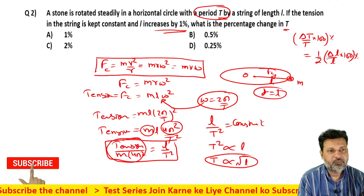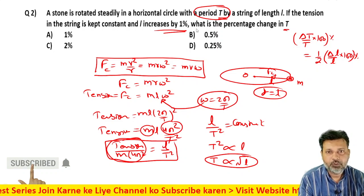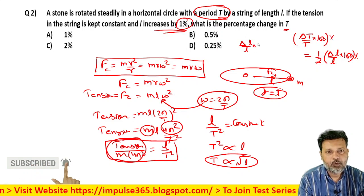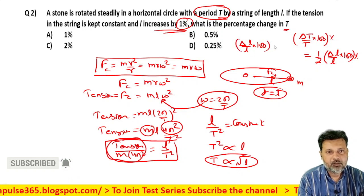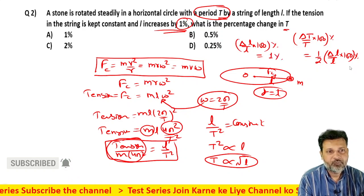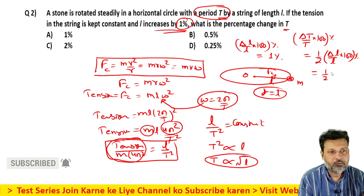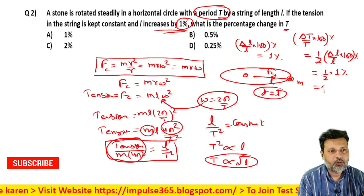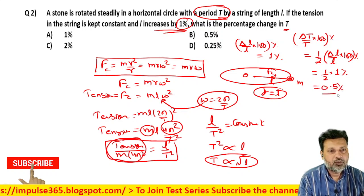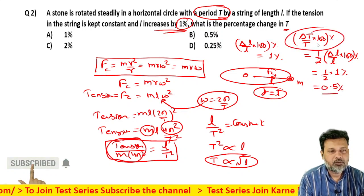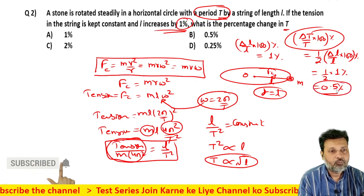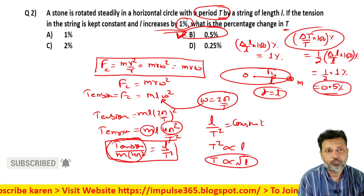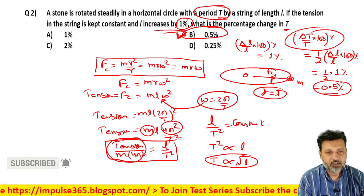This is now converted to percentage. The value given in the question is 1%, delta L upon L into 100 equals 1%. Replacing here: 1/2 into 1% equals 0.5%. So the change in time period will be 0.5%. Which option is correct? B is the most appropriate option. Okay, let's do the next question after this.